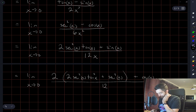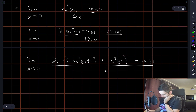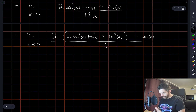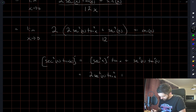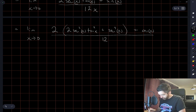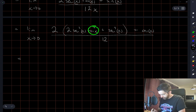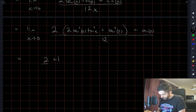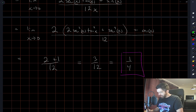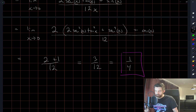I think I did this correctly — let me check that with some rough work. Yes, okay, that's correct. Now when I substitute x equals 0: the tan x term goes to 0 so we can ignore it. We get 2 times 1 plus 1 over 12, which is 3 over 12, which is 1 over 4. I'm fairly confident in that, as long as I didn't make any mistakes with the derivatives.